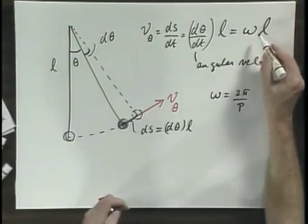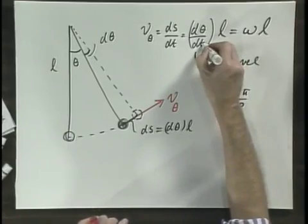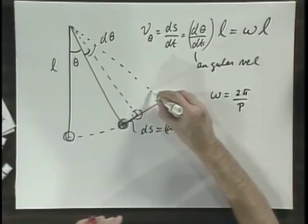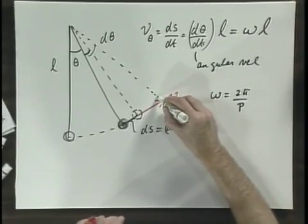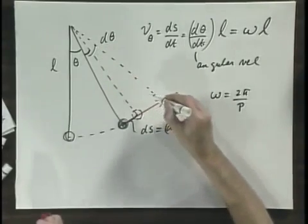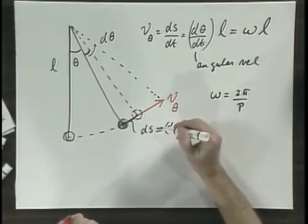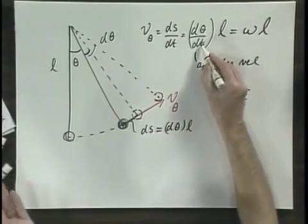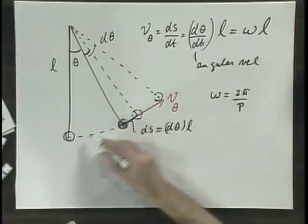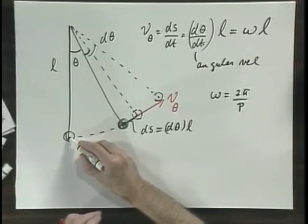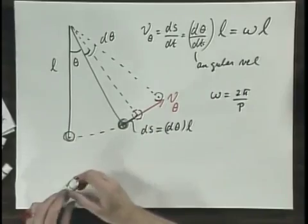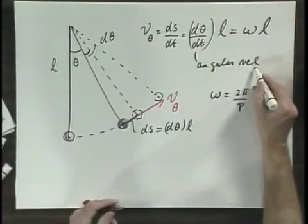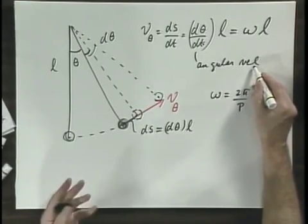This angular velocity is zero when the object stands still, when theta has reached a maximum value. And it is a maximum when it goes through equilibrium. So the angular velocity, this omega, changes in time.